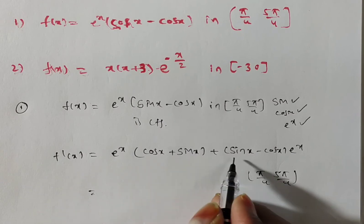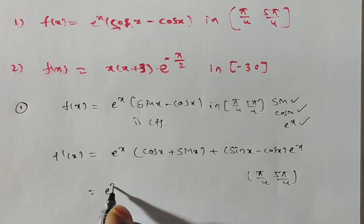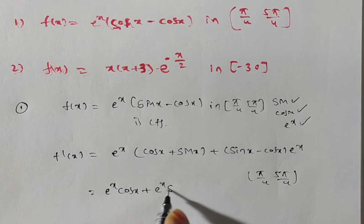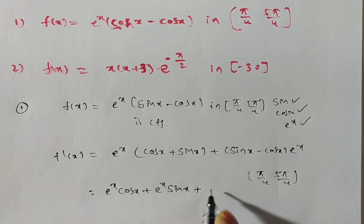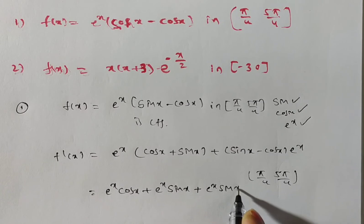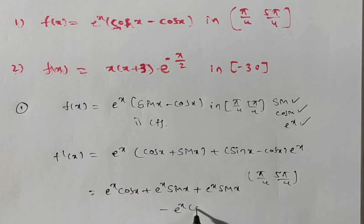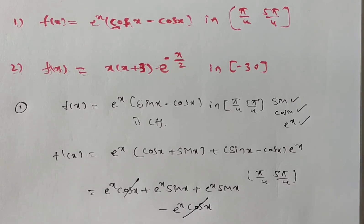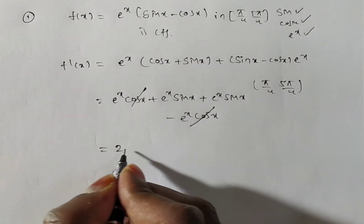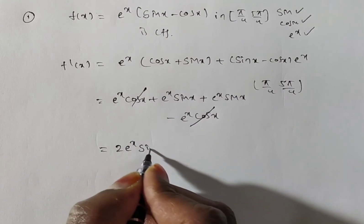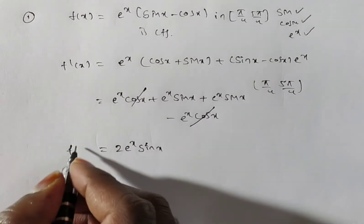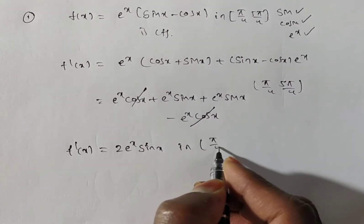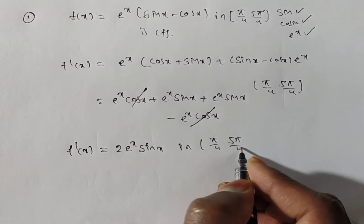Simplifying: eˣ cos x + eˣ sin x + eˣ sin x − eˣ cos x. The eˣ cos x terms cancel, leaving the remaining term as 2eˣ sin x. So f'(x) = 2eˣ sin x, which exists on the open interval (π/4, 5π/4).